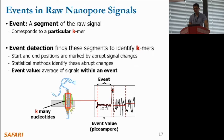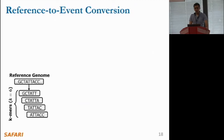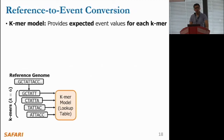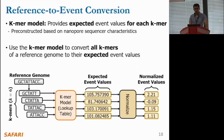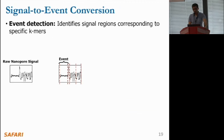An event value is the average of all signals within the same event. To convert the reference genome into events, we use a lookup table known as a k-mer model. This model provides expected event values for each possible k-mer and is pre-constructed based on the characteristics of nanopore sequencers. We use this k-mer model to convert all k-mers of a reference genome to their expected event values, followed by a normalization step to generate normalized event values for comparison purposes. We simply represent the reference genome as a series of events rather than k-mers.